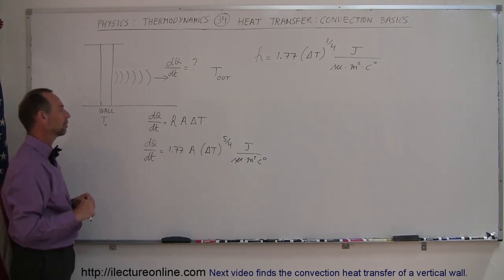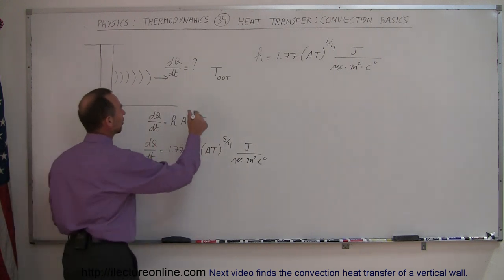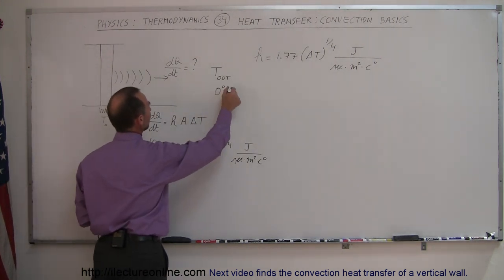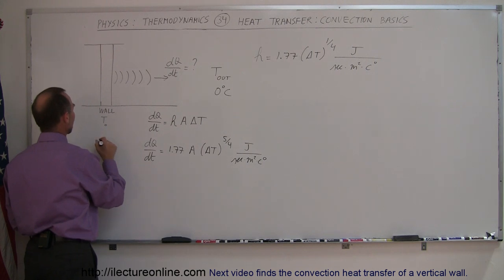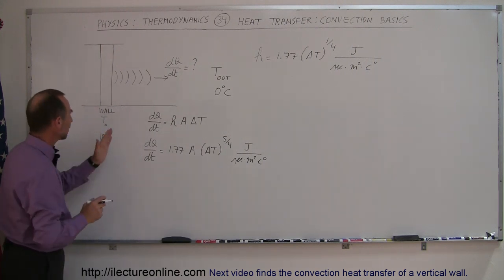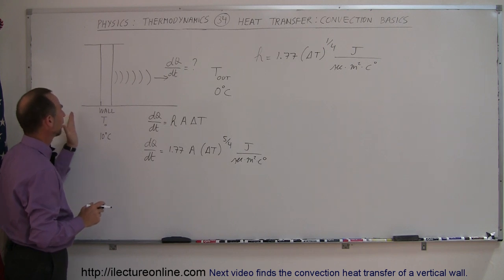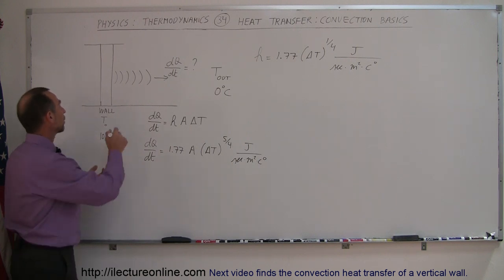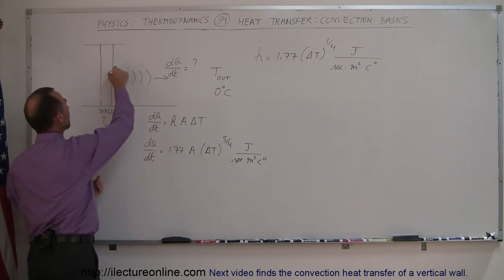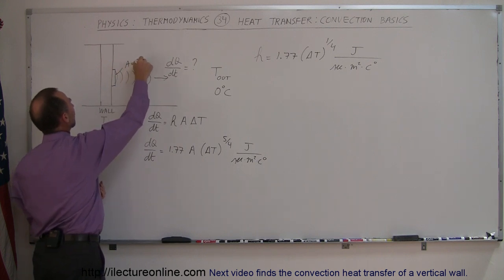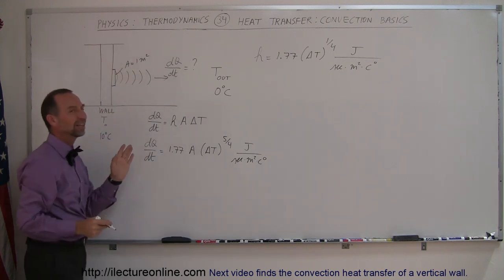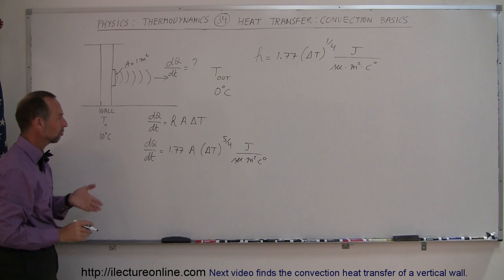Let's do an example for a particular temperature difference. Let's say the outside temperature is zero degrees centigrade and the wall temperature is ten degrees centigrade. It's not going to be the same as the inside temperature and it's also not going to be as cold as the outside temperature. For a given area, let's say we take one square meter of wall surface. How much heat is being taken away through convection currents?